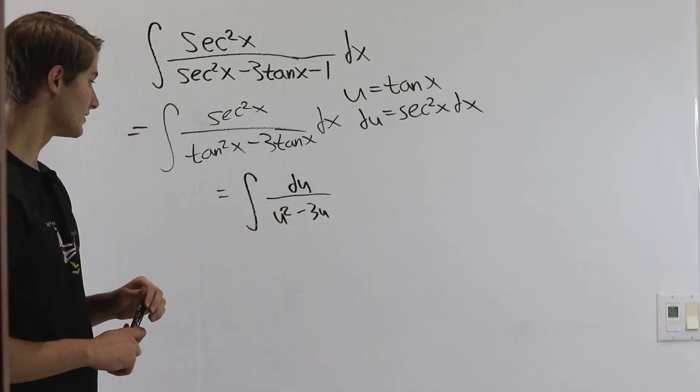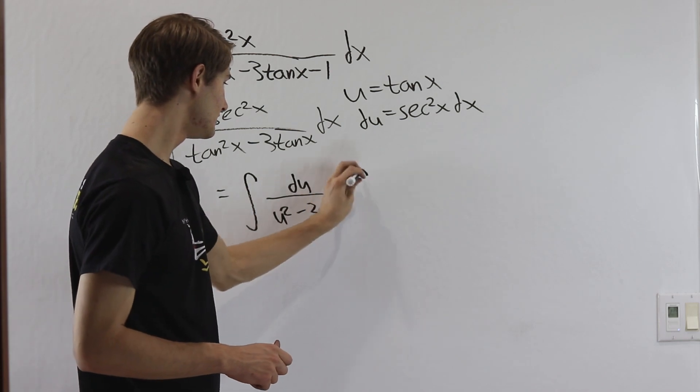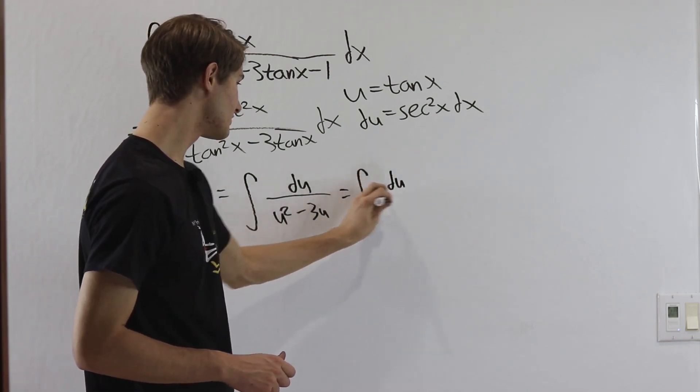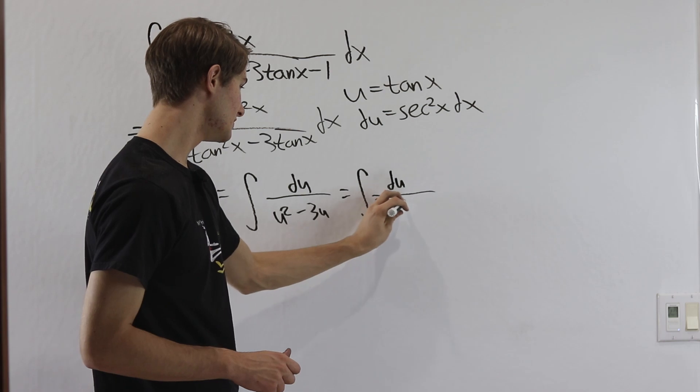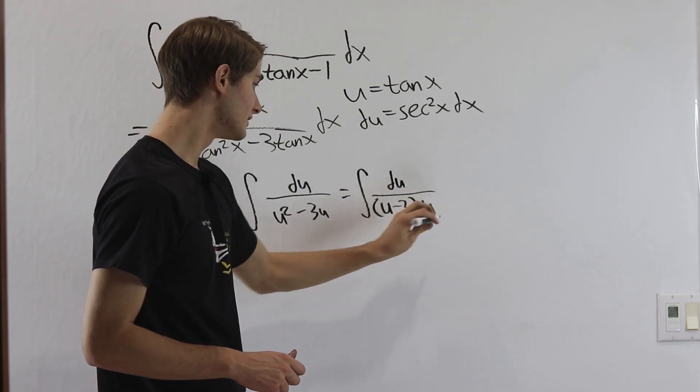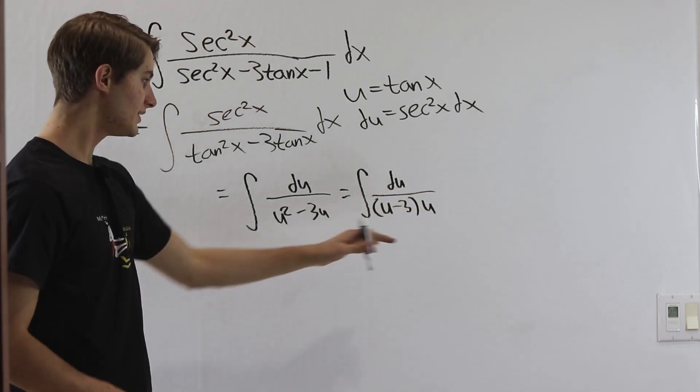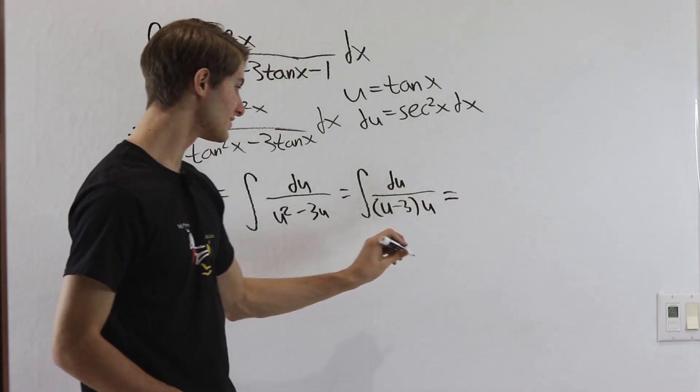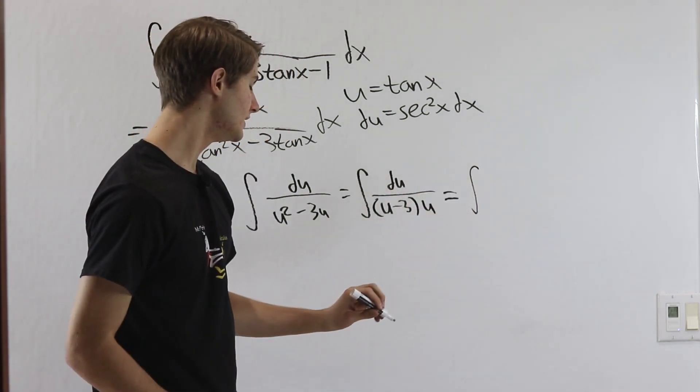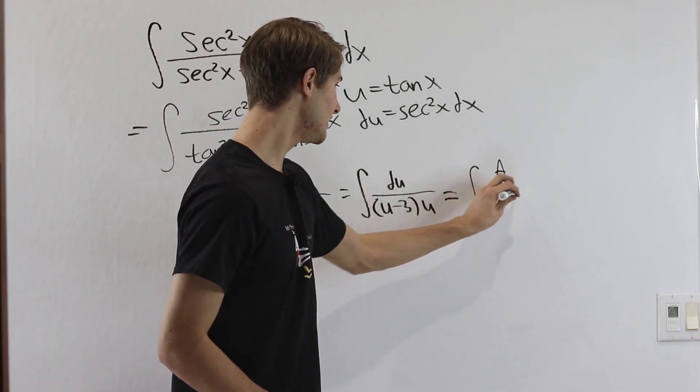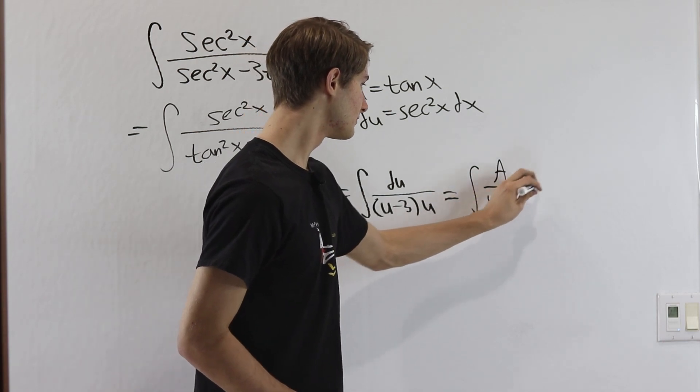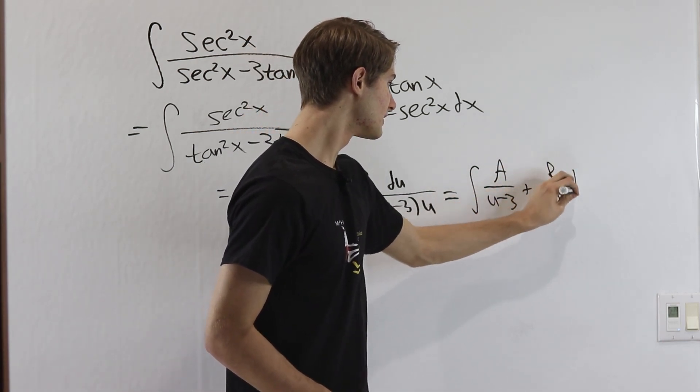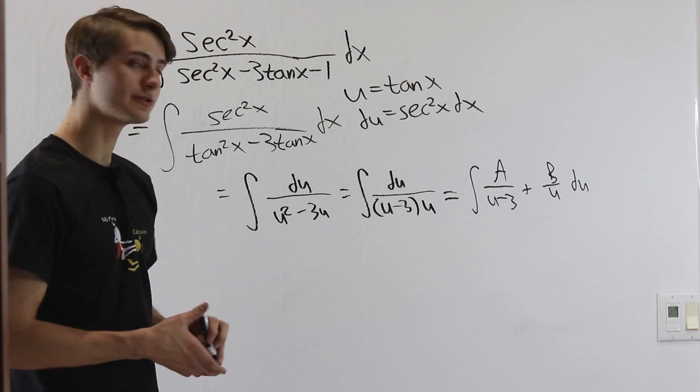So this has gotten us some pretty decent progress. Next thing we might want to do is factor the denominator. So we have u squared minus 3u is u minus 3 times u and then it's time to do some partial fractions on this to split it up into two parts. So we'll have a over u minus 3 plus b over u du and we want to solve for a and b.